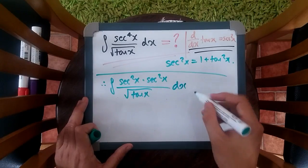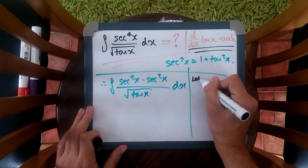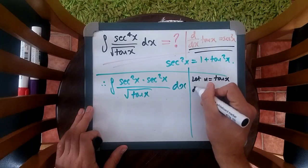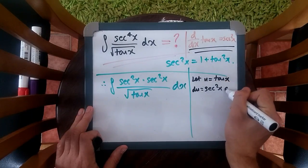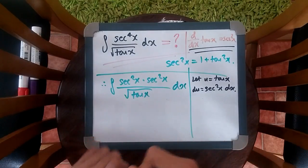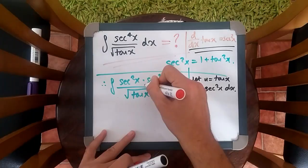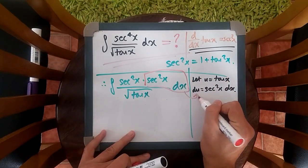Now using u substitution, this is where things actually start working themselves out. Suppose we let u equal tan x. Taking a derivative, so du would equal, like we said, sec squared x dx. Notice straight away that I'm talking about the sec squared dx here. So this is why we split them up. So we can see. So all of this becomes du.